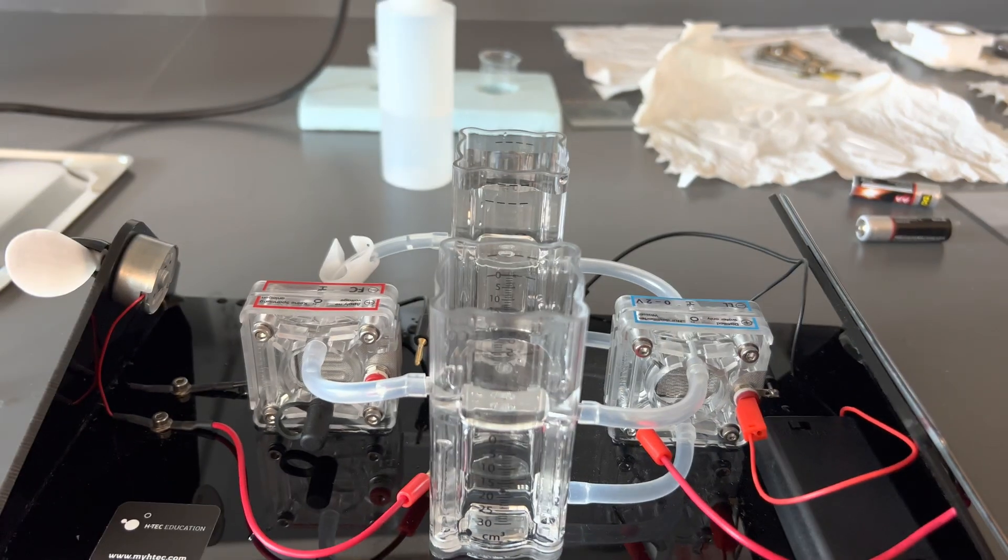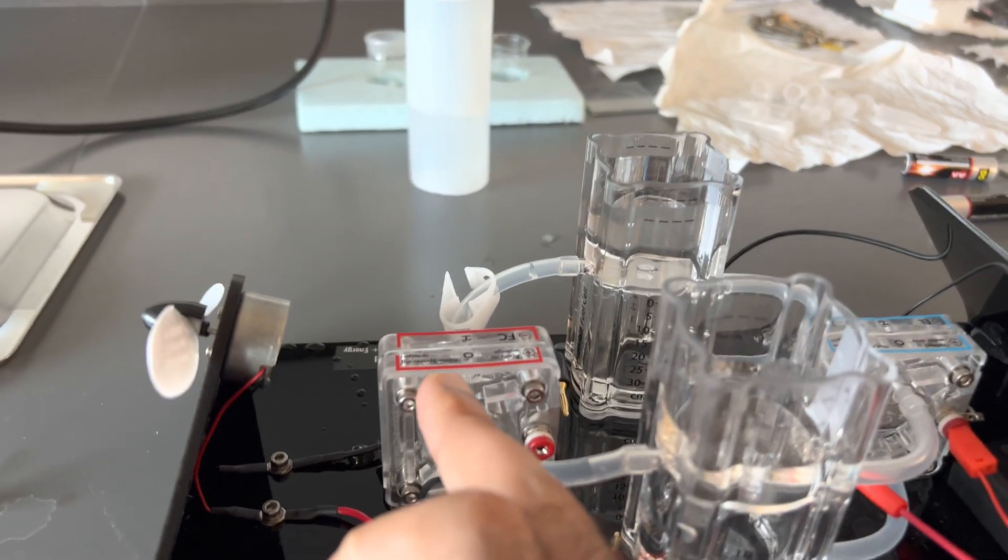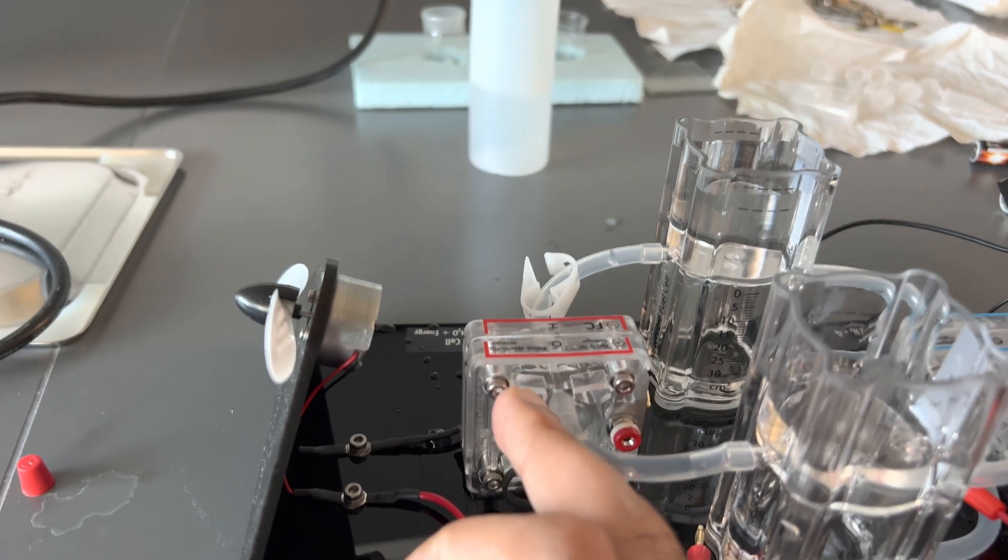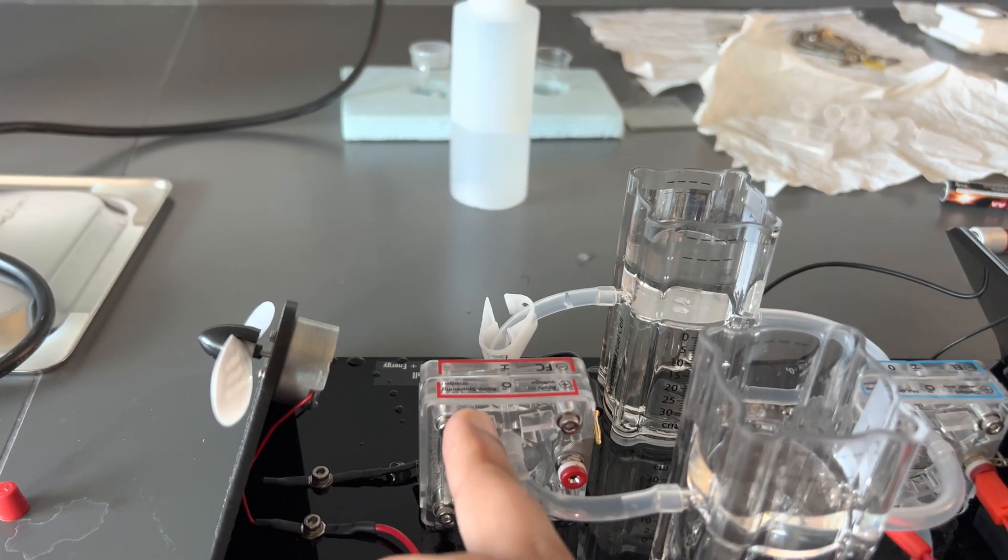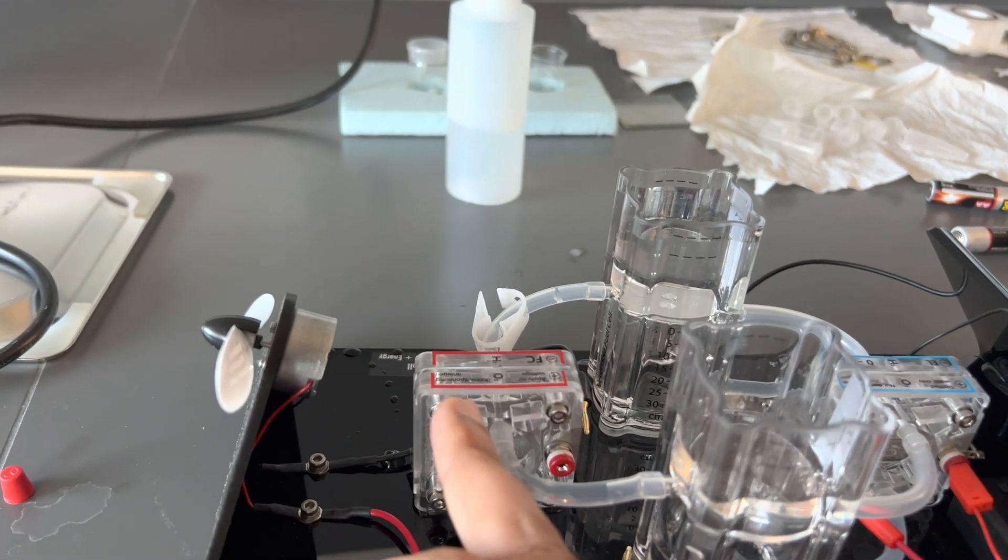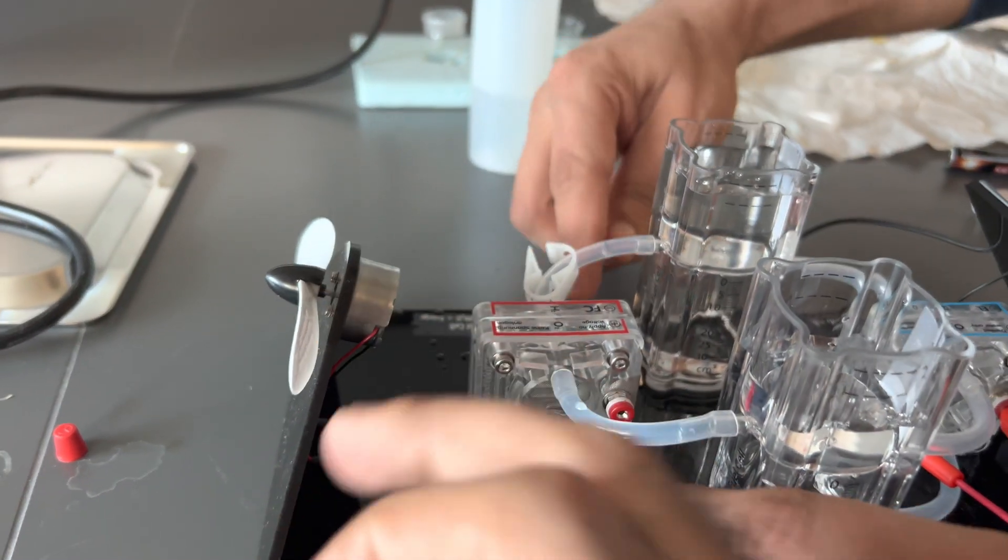It comes here through this pipe, it goes into what is called the fuel cell. Now this fuel cell will connect the hydrogen and the oxygen component back and we can run this fan.